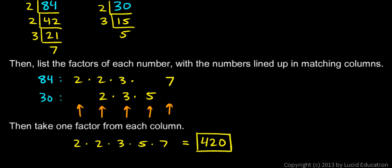And we did that by finding the prime factorization of each number, listing those with the numbers lined up in columns, and then taking one number in each column. In this way, we get all the factors of each number. 84 has 2 factors of 2, and a factor of 3, and a factor of 7. And you see in our answer here, we have 2 factors of 2, a factor of 3, and a factor of 7. So our answer is guaranteed to be a multiple of 84.